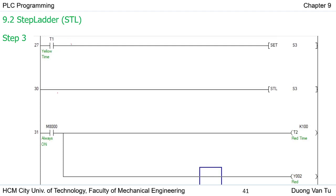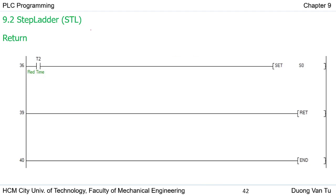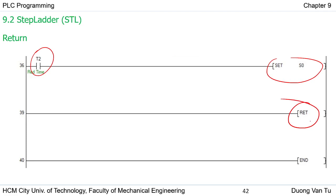For step three, I put one network as the action. Finally, we use the condition to SET step zero and use the RETURN instruction. Even if you SET step zero, without the RETURN instruction the ladder diagram will produce an error, so we must use the RETURN instruction. This is the content of this chapter. I hope you understand. If you have any questions, we will discuss them in class.